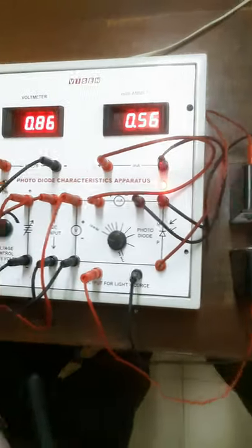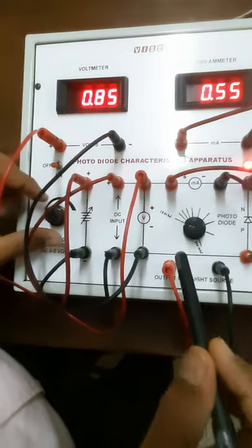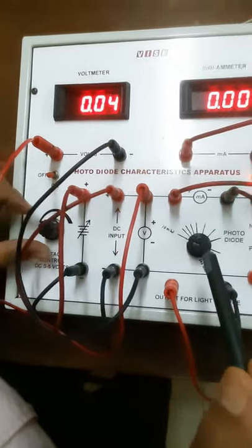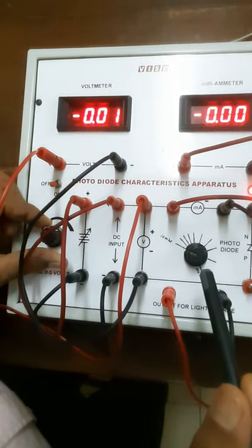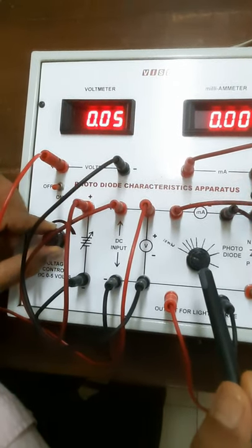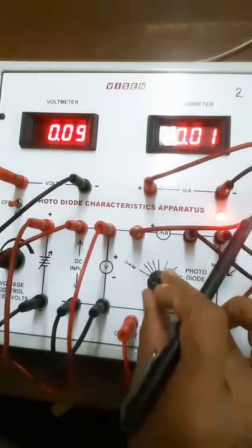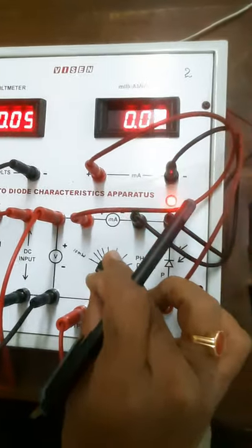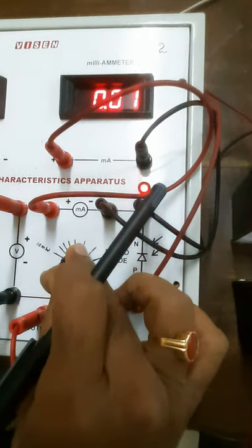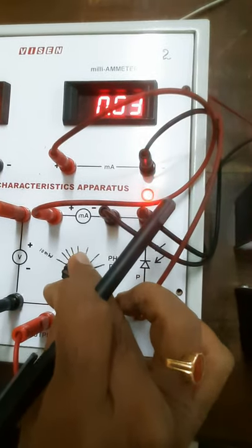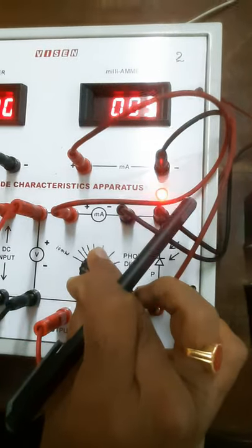In the second part of the experiment, here you have to keep the voltage to 5 volt. Then we have to vary the power knob in steps of 10, 20, 30, 40, 50, 60.